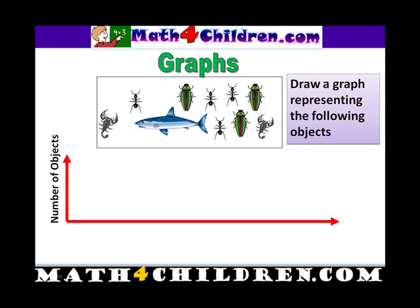Now let's look at the number of objects. We've got one, two, three, four ants. In the graph that will be like this.